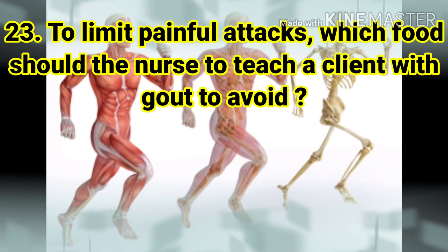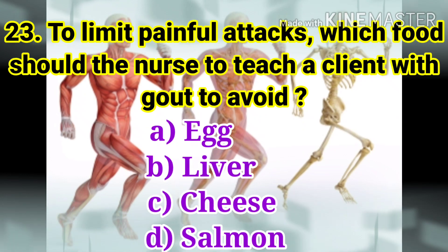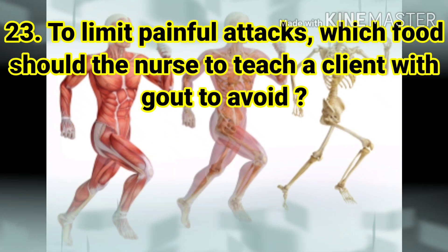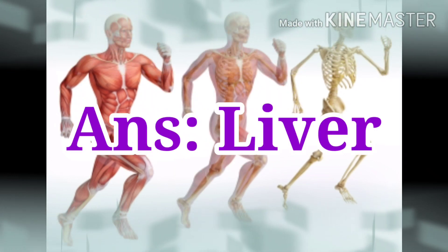The next question: to limit painful attacks, which food should the nurse teach a client with gout to avoid? The options are egg, liver, cheese, and salmon. The answer is liver. Gout is a high level of uric acid in the blood. Liver, red meat, and organ meat are high in saturated fat and should be avoided for a client with gout.